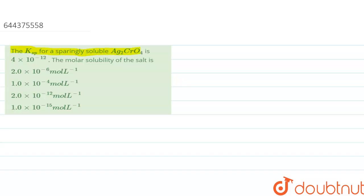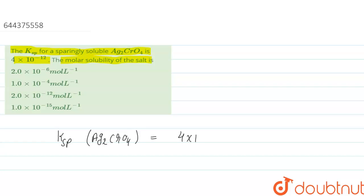Hello. In this question, we are given the Ksp for sparingly soluble Ag₂CrO₄ is 4×10⁻¹². The solubility product Ksp of Ag₂CrO₄ is given as 4×10⁻¹², and we have to calculate the molar solubility of the salt.